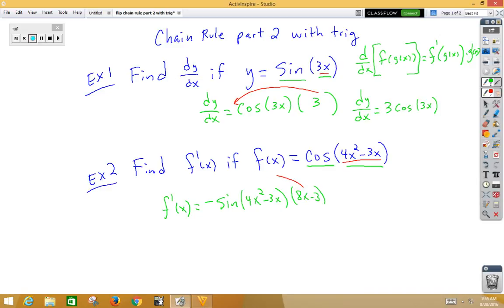Again, a standard way of writing that would be to bring this back piece out front. So we have f prime of x is equal to negative 8x minus 3 sine 4x squared minus 3x.